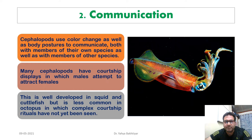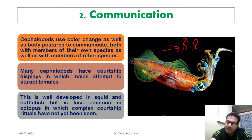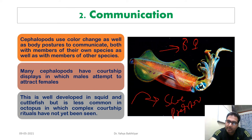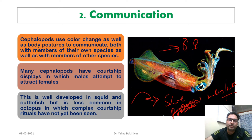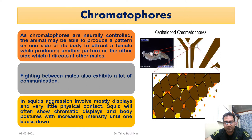During courtship, males not only attempt to attract females but also to fend off other males. The coloration is used both to attract females and to signal to competing males to stay away. This chromatic behavior used to attract females while warning off rival males is also a key communication mechanism.